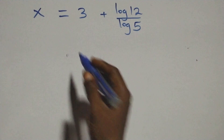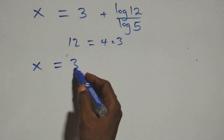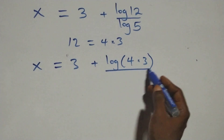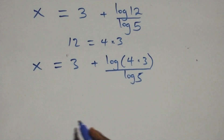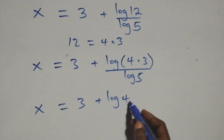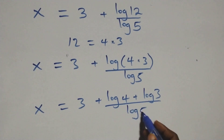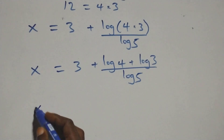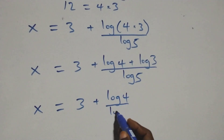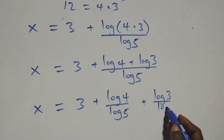Next, 12 can be expressed as 4 times 3, which implies x equals 3 plus log(4 times 3) over log 5. This follows the law of logarithms, so we have x equals 3 plus log 4 plus log 3, all over log 5. We separate this into two fractions: x equals 3 plus log 4 over log 5 plus log 3 over log 5.